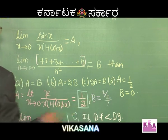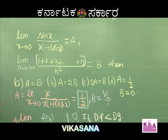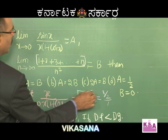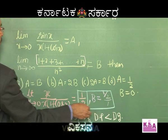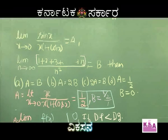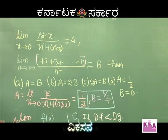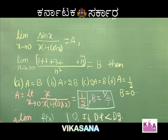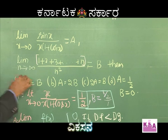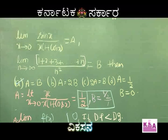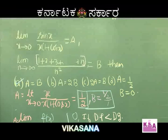Do you agree? So the value of b is 1/2. We have a = 1/2 and b = 1/2. Therefore option A — a = b — is correct. See how simple it is.